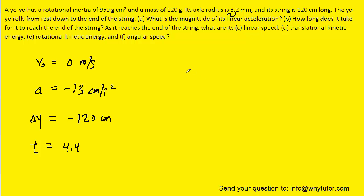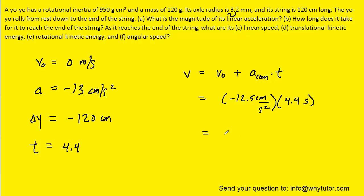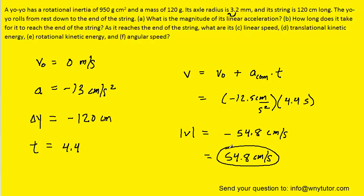For part C, to find the linear speed, we can once again refer back to the equations of kinematics. We know that the final velocity equals the initial velocity plus the acceleration of the center of mass multiplied by the time. Again, the initial velocity is 0, so we can ignore that term. We have the acceleration about the center of mass times the time we just figured out. This works out to be roughly negative 54.8 centimeters per second. Since the question simply wants the speed, we take the absolute value, giving us 54.8 centimeters per second. So this would be the correct answer to part C.